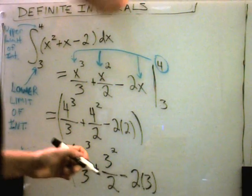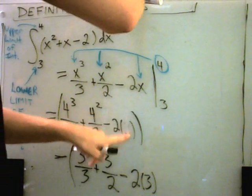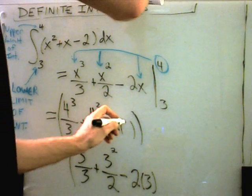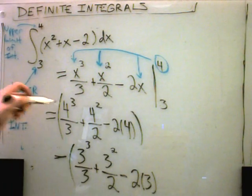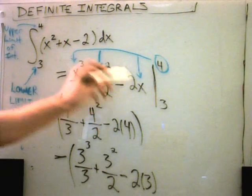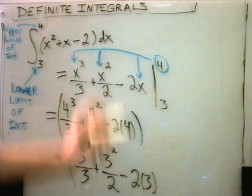And I realize I just made a mistake here. I plugged a 2 in here. I should be plugging a 4 in here. So sorry about that in case you're wondering what the heck's going on. So I've got 4 cubed, 4 squared, 2 times 4. And then I'm going to subtract off plugging a 3 in everywhere.